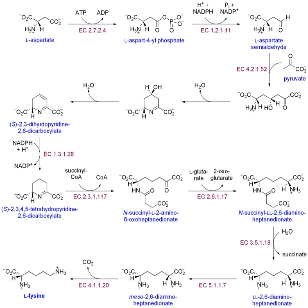The aspartate family of amino acids includes threonine, lysine, methionine, isoleucine, and aspartate. Lysine and isoleucine are considered part of this family even though part of their carbon skeleton is derived from pyruvate. In the case of methionine, the methyl carbon is derived from serine and the sulfur group, but in most organisms it is derived from cysteine. The biosynthesis of aspartate is a one-step reaction: aspartate aminotransferase catalyzes the transfer of an amino group from aspartate onto alpha-ketoglutarate to yield glutamate and oxaloacetate. Asparagine is synthesized by an ATP-dependent addition of an amino group onto aspartate, catalyzed by asparagine synthetase, which adds nitrogen from glutamine or soluble ammonia.